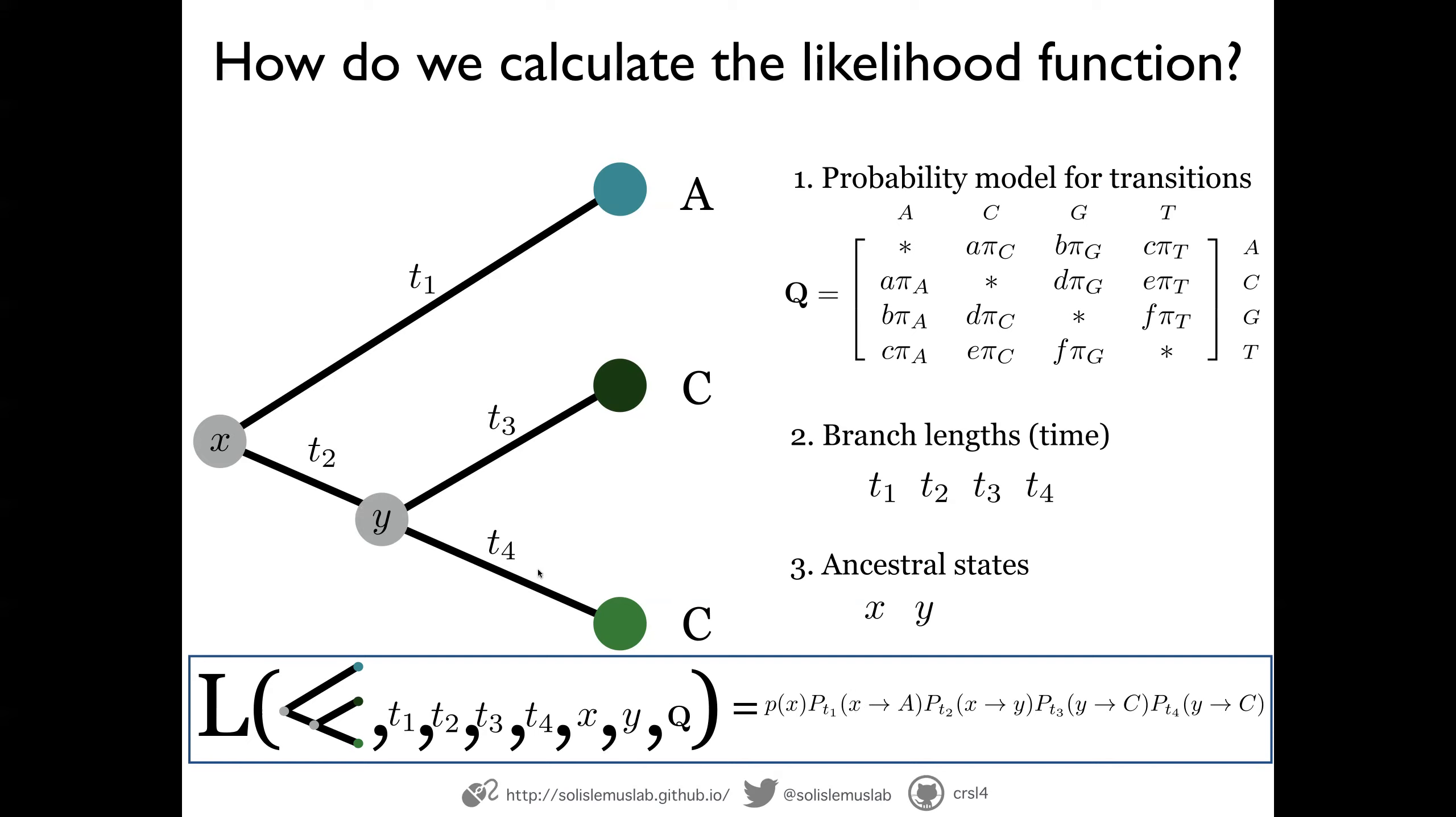That is the probability of transitioning from whatever x was into A in time t1. This is the first transition probability. And then the second one, transition from x to y in time t2, and so on and so forth. So each edge on the tree represents one transition.